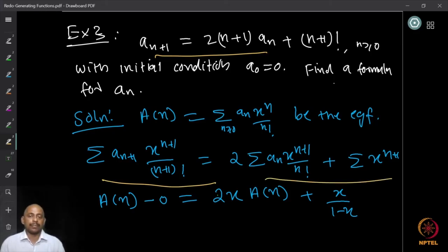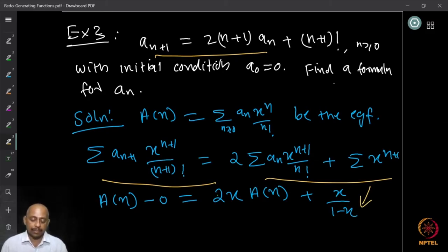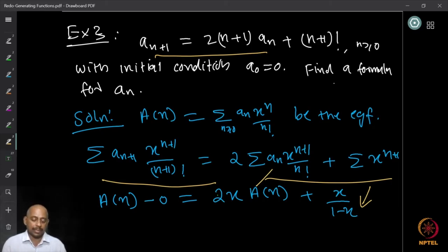The right-hand side gives: 2 times ∑ aₙ · xⁿ⁺¹/n! (the (n+1) cancels), which is 2x · A(x); plus ∑ xⁿ⁺¹, since (n+1)! cancels, giving x/(1−x). Since a₀ = 0, the LHS is just A(x). So A(x) = 2x · A(x) + x/(1−x), meaning A(x)(1 − 2x) = x/(1−x).